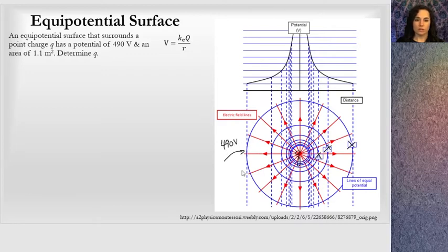This whole surface, all along this whole surface. And remember this is a sphere, a point charge is 3D, so we have a sphere going on. And it says an area of 1.1 meters squared. So the surface area of that sphere is 1.1. Determine Q.